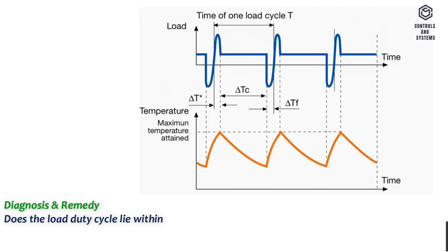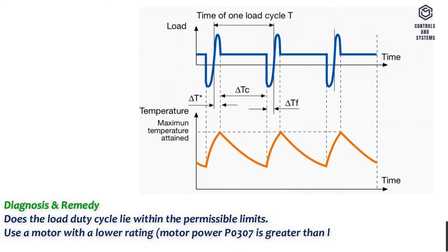Diagnosis and remedy: Does the load duty cycle lie within the permissible limits? Use a motor with a lower rating, motor power P0307 is greater than inverter power R0206.